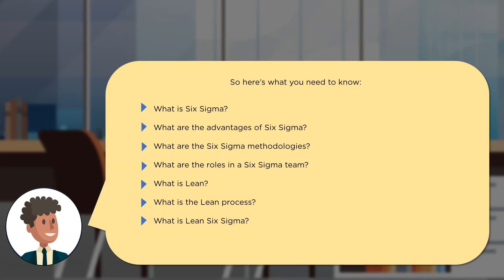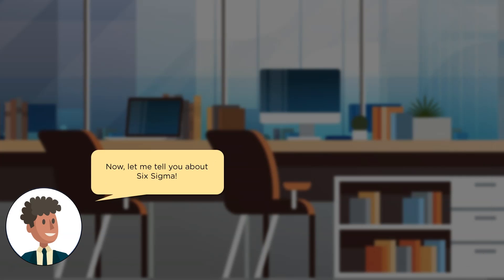Firstly we'll have to understand what Six Sigma is, what its advantages are, some of its methodologies, what the different roles in a Six Sigma team are, what is Lean, what is a lean process, and what is Lean Six Sigma. So now let's get started with understanding what exactly Six Sigma is.